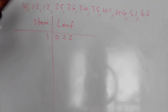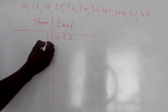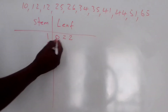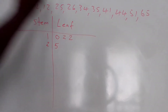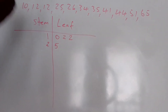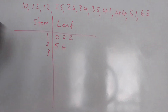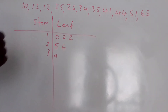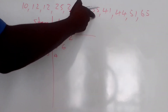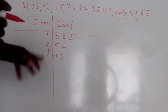Now I want to write 25, so I write 2 under the stem and 5 under the leaf. I also want to write 26, so I put 6 under the leaf. For 34, I write 3 under the stem and 4 under the leaf. For 35, I write 5 under the leaf — I don't need to write another 3.